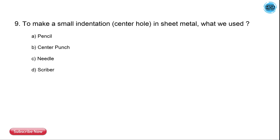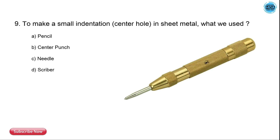The 9th question is: to make a small indentation or center hole in sheet metal, what do we use? The options are pencil, center punch, needle, and scriber. The correct answer is center punch.